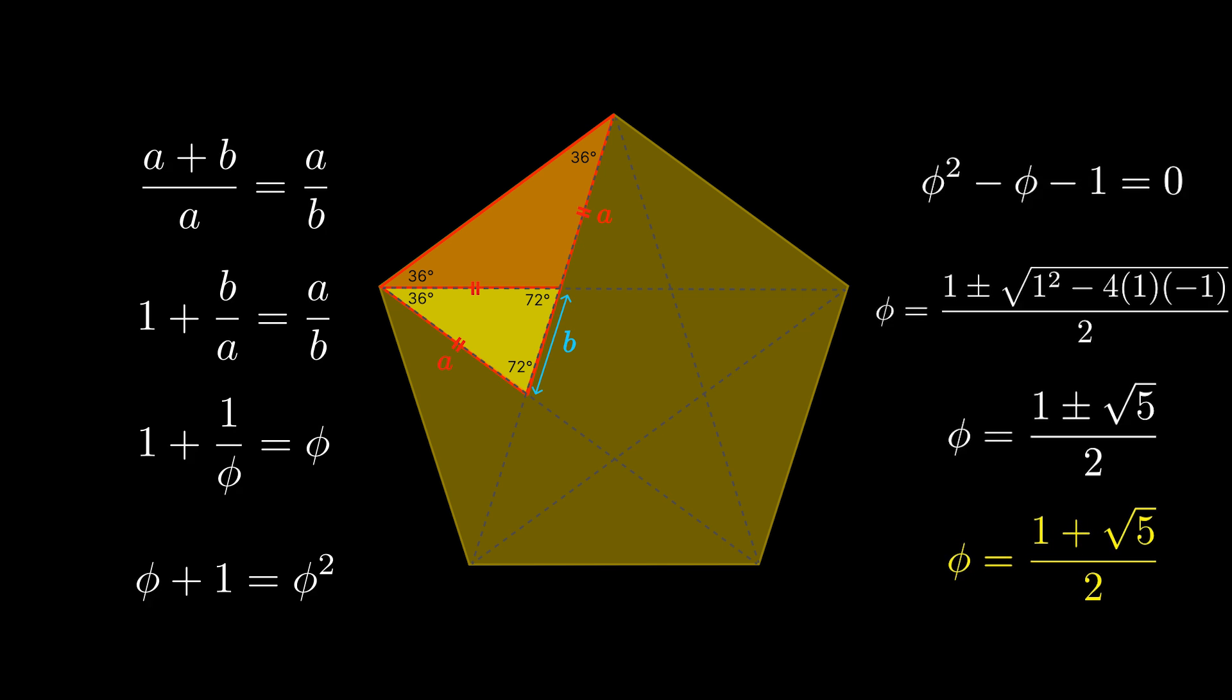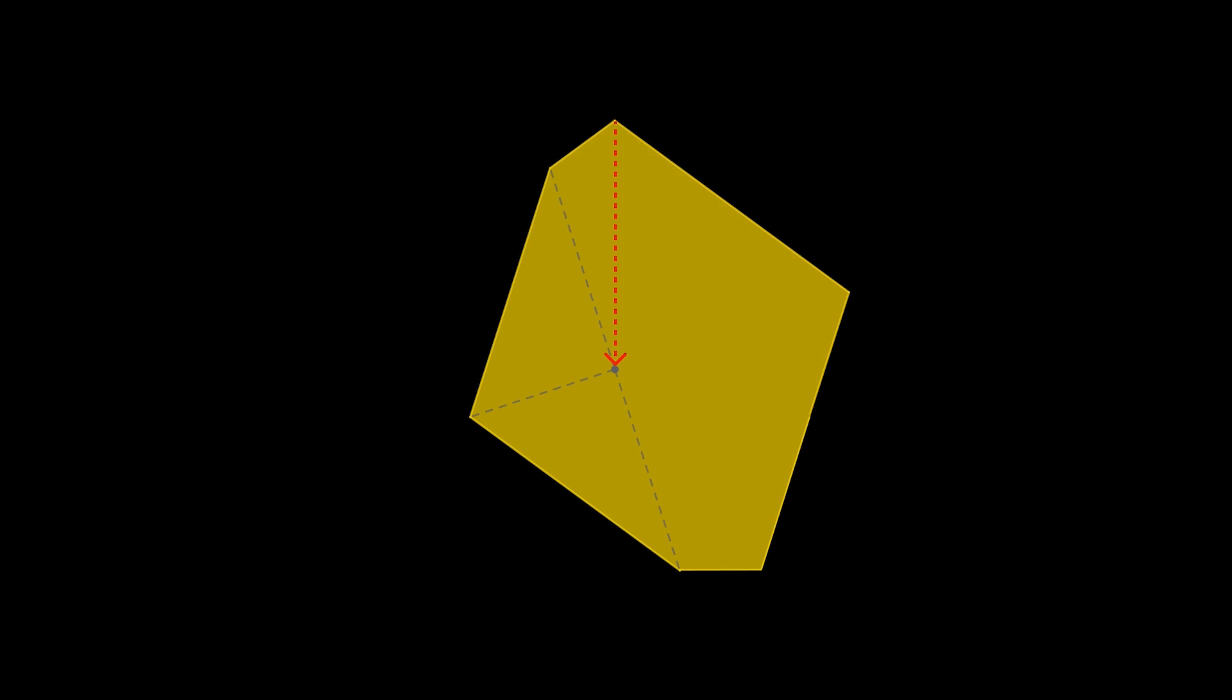So now we know where the golden ratio appears in a regular pentagon, but still it doesn't explain why it appears in our folded regular pentagon and why this side length and this side length should be in the golden ratio. Can you see the golden triangle hiding in there?